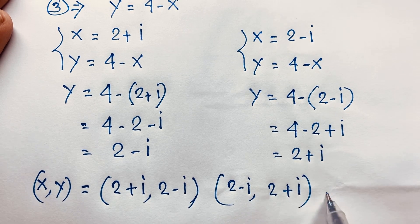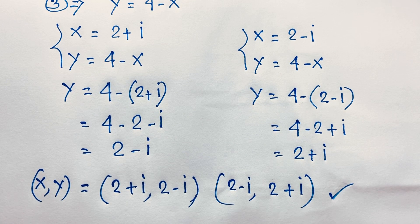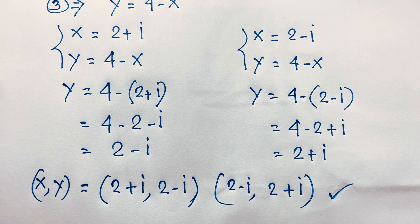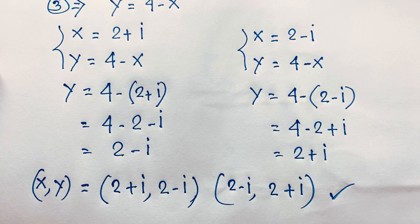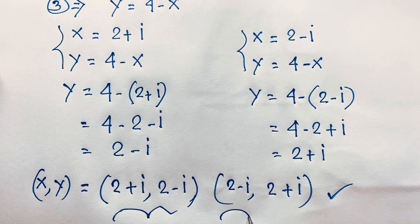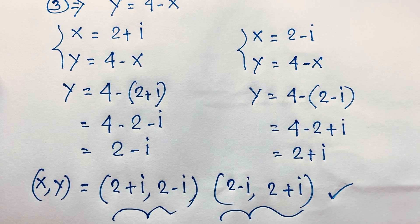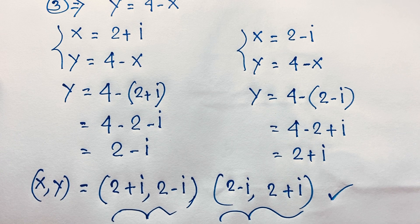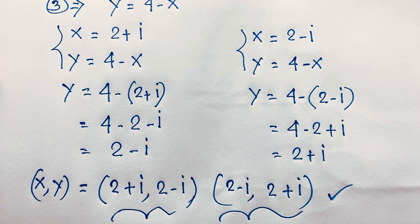This is our final answer in this math Olympiad question. These are the values of x and y — both are complex numbers and there is no real solution. Thank you all. If you enjoyed this question, please subscribe to the channel for other interesting videos. Goodbye, take care everyone, have a good day.